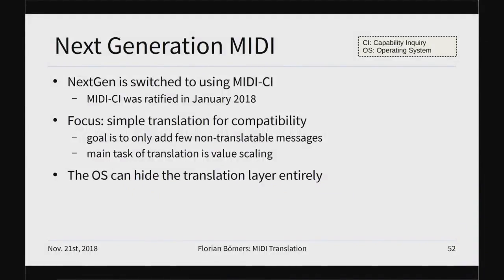The path to next generation MIDI is MIDI CI — Capabilities Inquiry. That's a standard now, ratified in January. It basically gives you a way to query a MIDI device: 'Do you support this or that? Do you support next generation protocol?' If yes, then let's switch to it. Every device starts in MIDI 1.0 mode, then it does MIDI CI negotiation and can then switch to next generation MIDI. Since it is so close to MIDI 1.0, it's also very easy to translate back and forth — even if you're doing next generation MIDI in the operating system, it's still very easy to satisfy MIDI 1.0 software by translating it down.